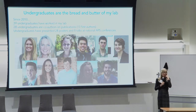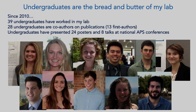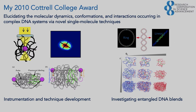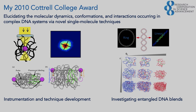An important part of my lab is that undergraduates are really the bread and butter — they do the heavy lifting. We don't have a graduate program at USD, so all this work is done mostly by undergraduates. Research Corporation has been very supportive of that. My first grant when I started at USD was the Cottrell College Award — I started in the fall of 2009 and got this award in 2010. The title was 'Elucidating the Molecular Dynamics, Conformations, and Interactions Occurring in Complex DNA Systems via Novel Single Molecule Techniques' — too long, in my opinion looking back.